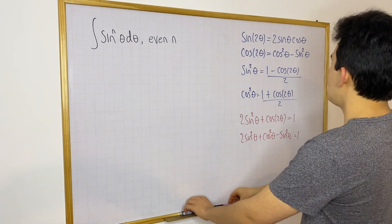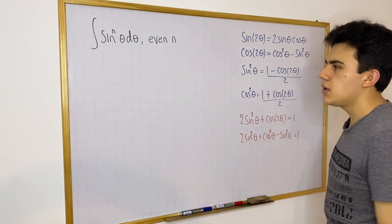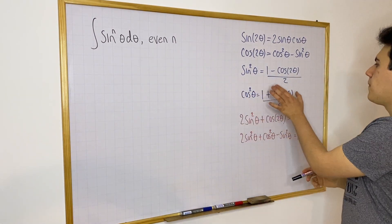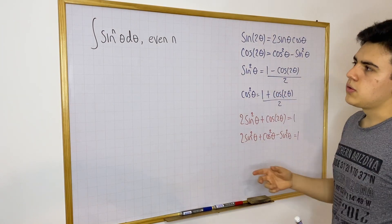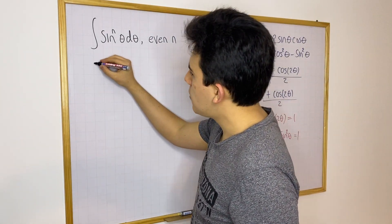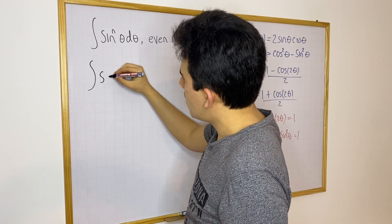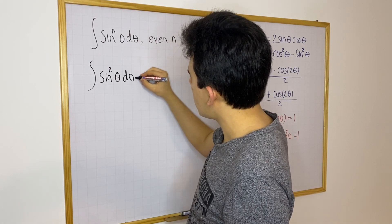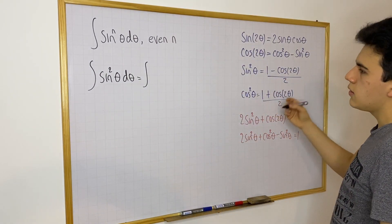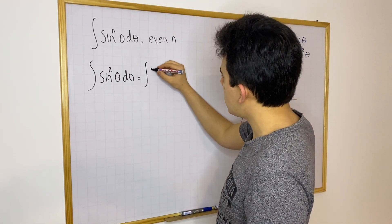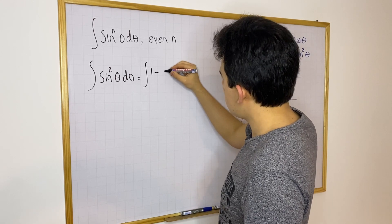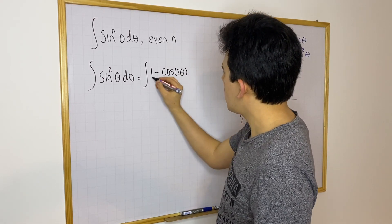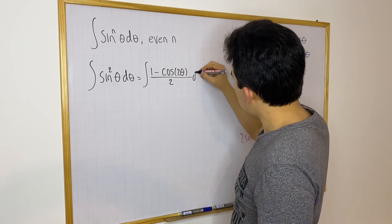Now how can we use these formulas to integrate? Instead of integrating an even power of sine, we can integrate the equivalent expression. Let me give you an example. Say we have the antiderivative of sine squared θ dθ. Using the formula, we get the antiderivative of (1 minus cosine of 2θ) divided by 2, dθ.